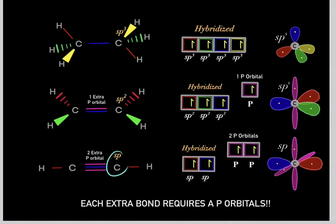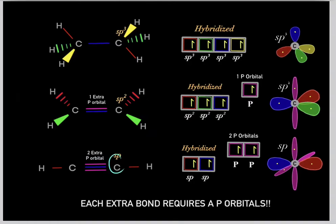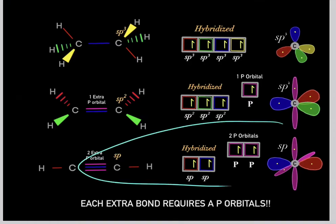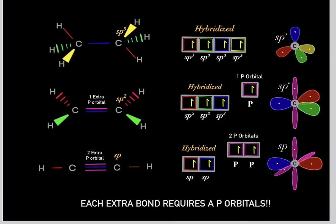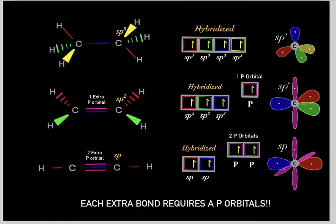What about a carbon with two extra bonds? If a carbon has two extra bonds — such as a triple bond — it must have two p-orbitals. So therefore, it must be sp-hybridized. That's a simple rule for determining the hybridization of an atom.